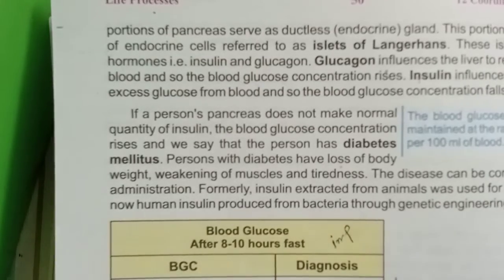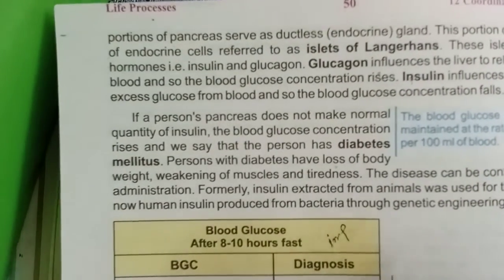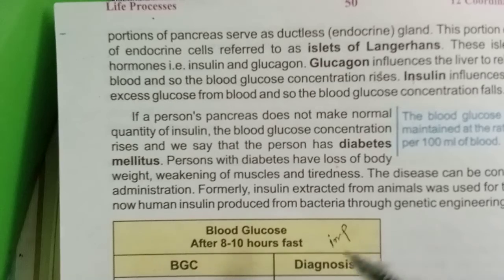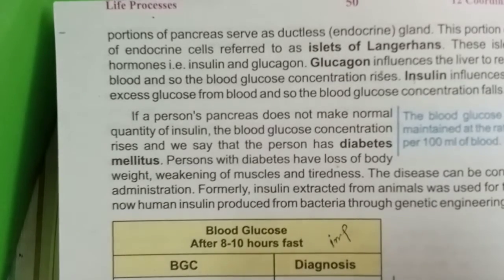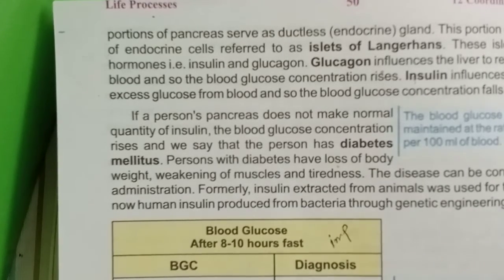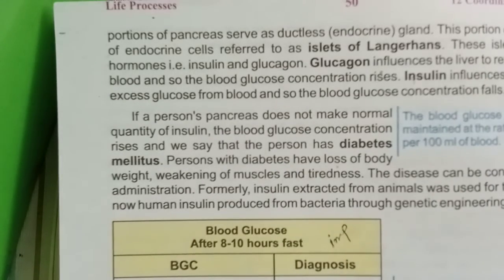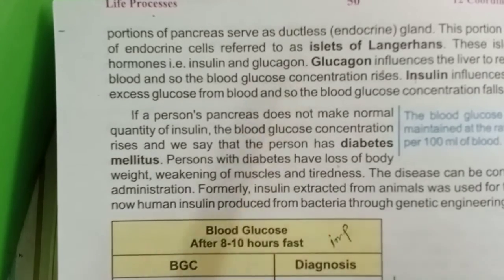One important thing: do not ignore the tables. There are two tables showing blood glucose levels after 8 to 10 hours of fasting. Concentration values are given in these tables. These values may appear in MCQs, so both tables are important.